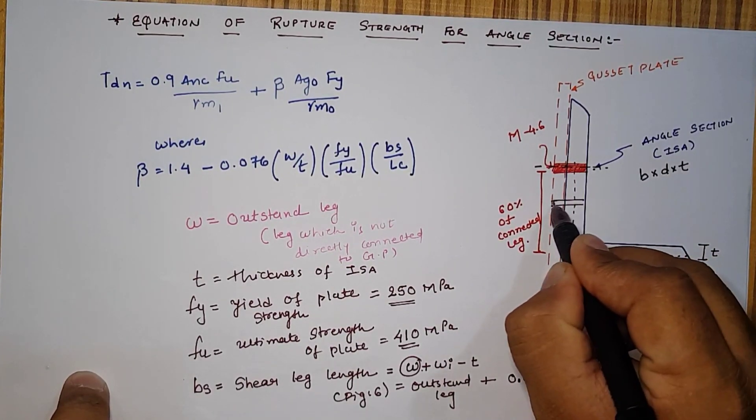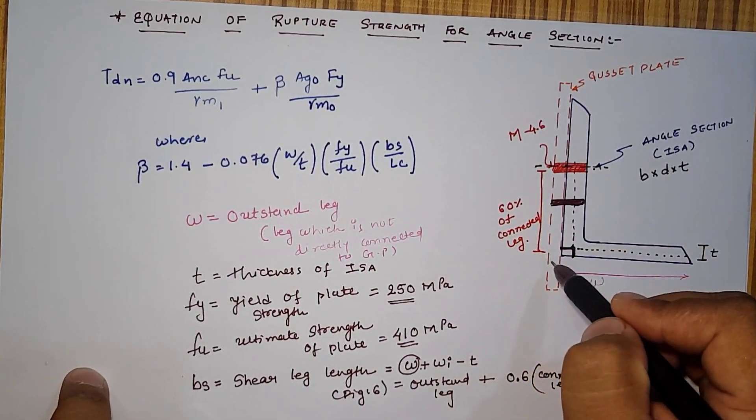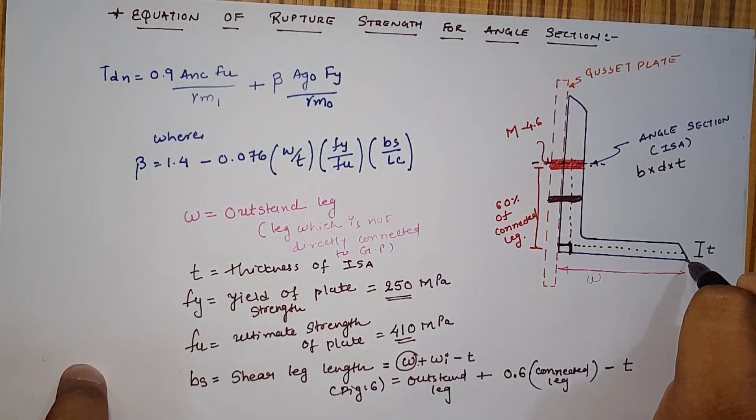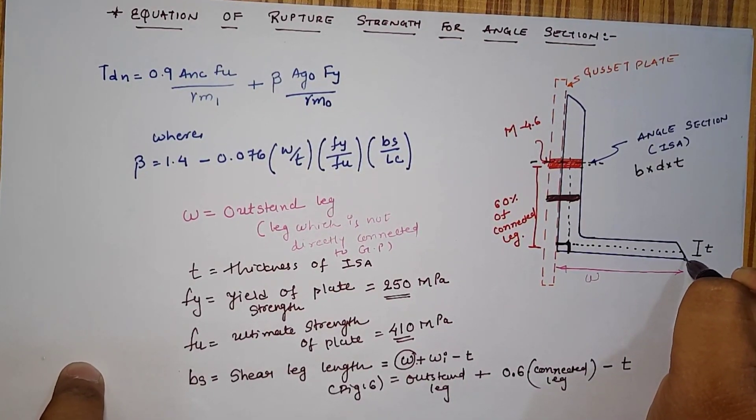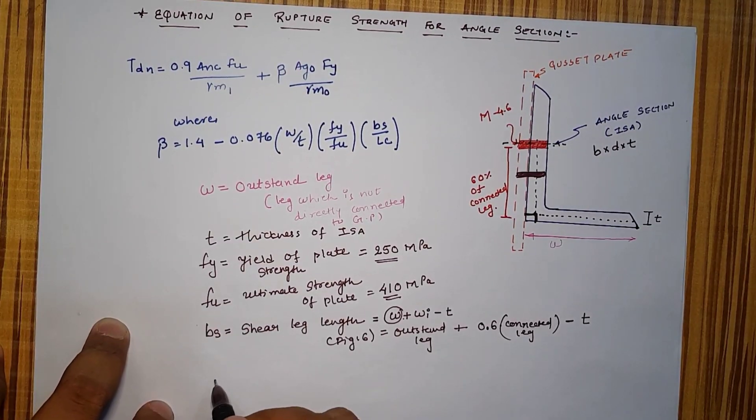BS is nothing but outstand leg plus Wi minus T or we can say that if two numbers of bolt is given in a row, the center to center distance of the outermost to the distance up to the outside leg is known as the shear leg width or shear leg length.